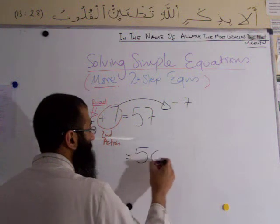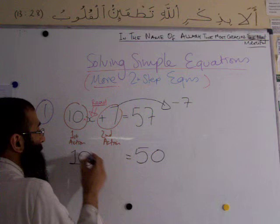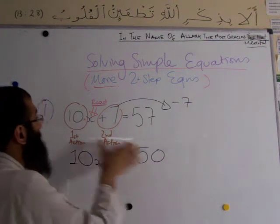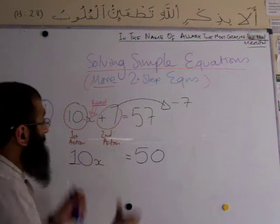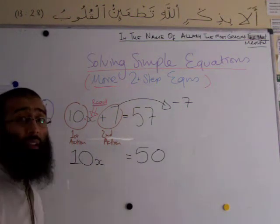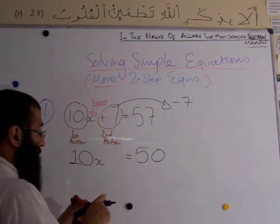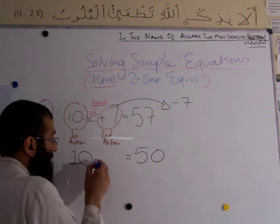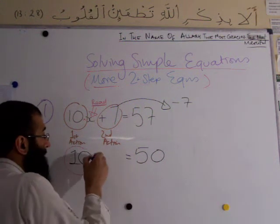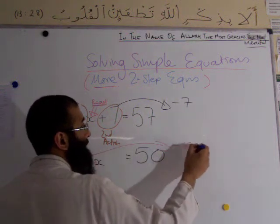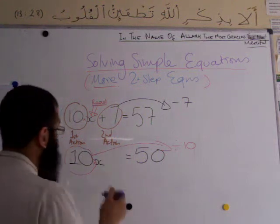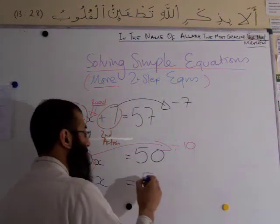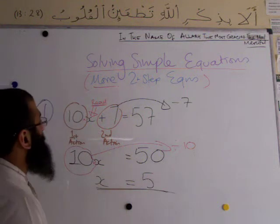57 take away 7 gives you 50. Copy everything down — copy the equal sign in the same place, copy the 10x down. Keep the maths consistent and beautiful so the examiner can see you understand mathematics. Now we have to undo the first action. Opposite of times by 10 is divide by 10. Copy the x down, and divide 50 by 10 to get an answer of 5.